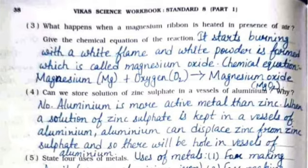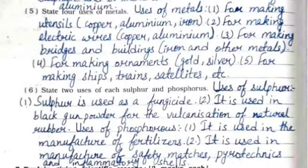Fourth: can we store zinc sulfate solution in an aluminum vessel? No. Aluminum is a more active metal than zinc. When zinc sulfate solution is kept in an aluminum vessel, aluminum displaces zinc from zinc sulfate, creating holes in the aluminum vessel.